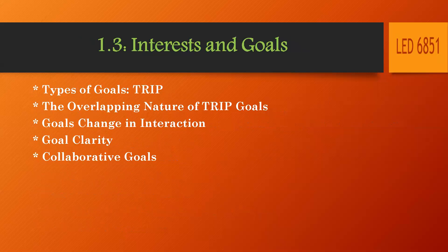Interest and goals: types of goals, TRIP — the overlapping nature of TRIP goals, and goals change in interaction. One part in conflict is shared goals. When you don't have shared goals, there is a high range of possibility for conflict occurring, interpersonal or social. And goal clarity, clarification of goals, and collaborative goals.